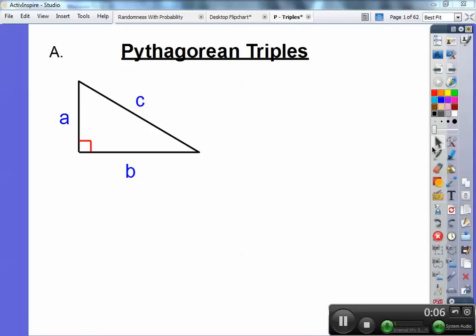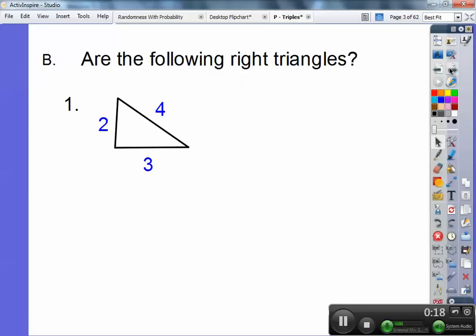Pythagorean triples deals with right triangles. Everybody's heard the formula, a squared plus b squared equals c squared. Just make sure that c is always opposite this right angle. It's called the hypotenuse. So let's try some of these. Is this triangle a right triangle with sides 2, 3, and 4?